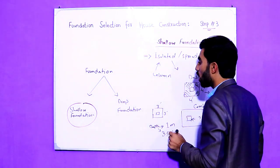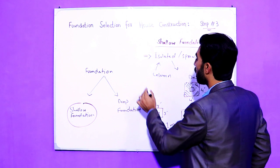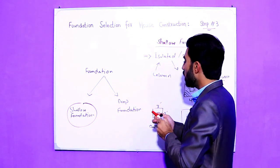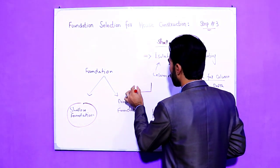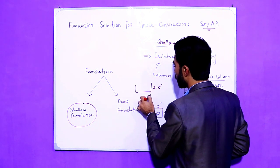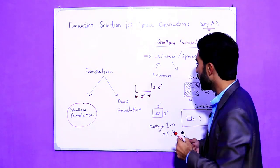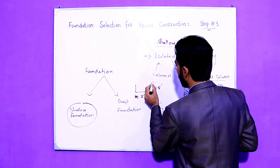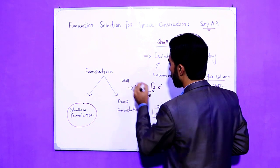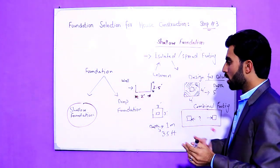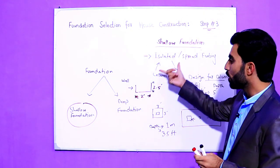Now, for the wall — since this is not a load-bearing wall because we also have columns here — for the wall foundation, the depth should be two point five feet and the width should be two feet.